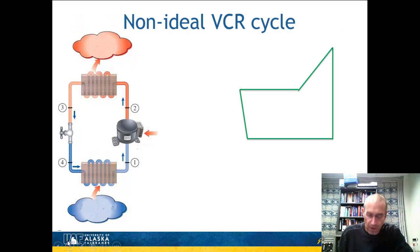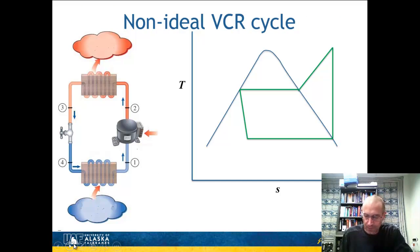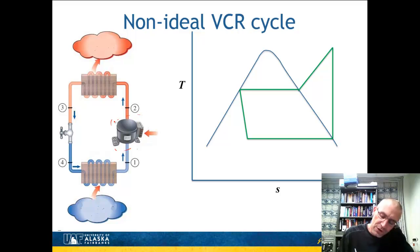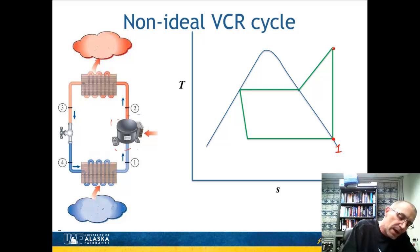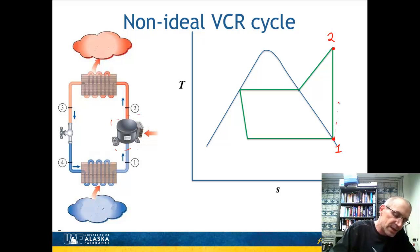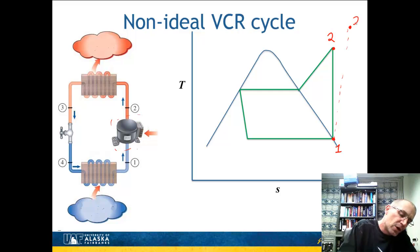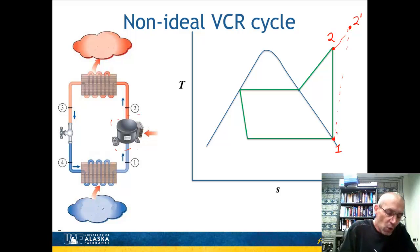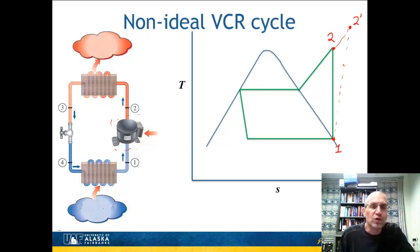Now let's talk about the non-ideal vapor compression cycle. One non-ideal effect is an inefficient compressor between points 1 and 2. If the compressor is inefficient, entropy increases, so the exit state — call it point 2 prime — is on the same high-pressure isobar but at higher entropy. This results in a larger increase in enthalpy and a larger work requirement.